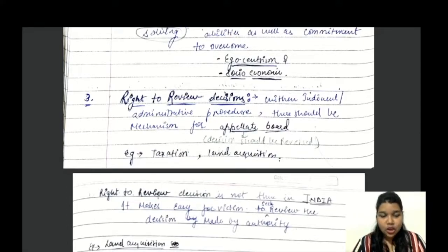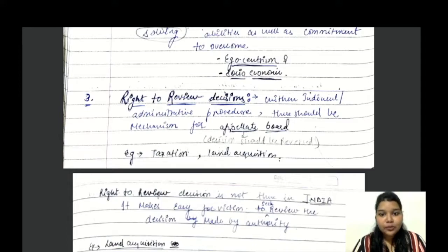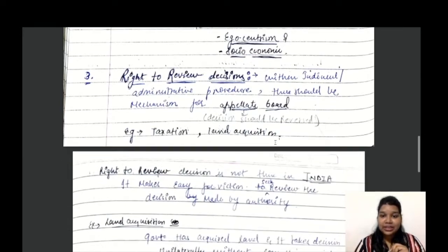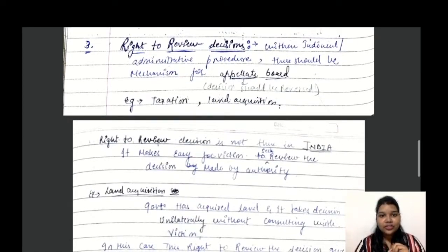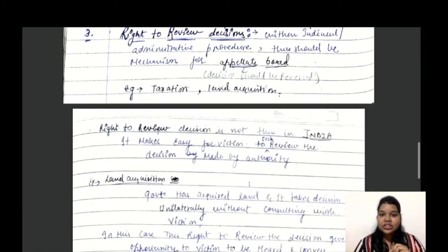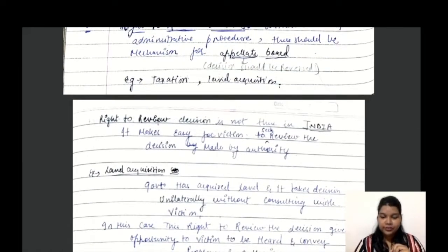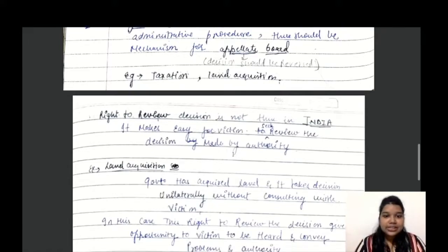The third way to inculcate objectivity is the right to review decisions. There should be a mechanism — an affiliate board — within the judicial-administrative procedure where decisions can be reviewed. For example, in cases of taxation or land acquisition. However, this right to review decisions does not currently exist in India, though it exists in foreign countries.